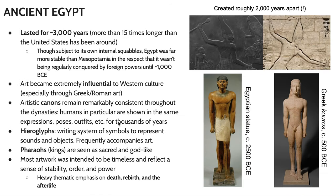Another remarkable thing about Egyptian art is that it remains remarkably consistent throughout its history. These are two pieces of a pharaoh in a smiting pose — basically holding a mace or club about to strike an enemy's head — and these were created 2,000 years apart. They look remarkably similar. One is a sunken relief and the other a raised relief, but the image is virtually the same. This is one of the reasons ancient Egyptian artwork is so recognizable: it's very canonized.